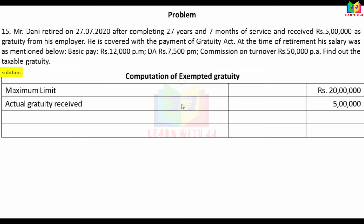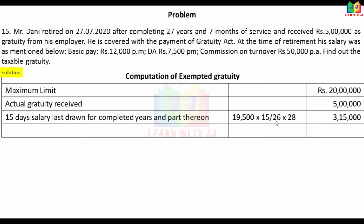The third condition is 15 days' last drawn salary multiplied by completed years of service. Last drawn salary includes Basic and DA only — commission on turnover is not included. So 15 days' salary = (12,000 + 7,500) × 15 ÷ 26 × completed years. Since 27 years 7 months — more than 6 months is rounded up to 28 years. Calculation: 19,500 × 15 ÷ 26 × 28 = Rs. 3,15,000.